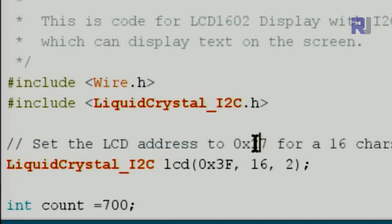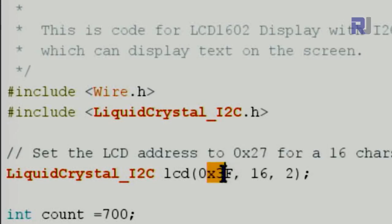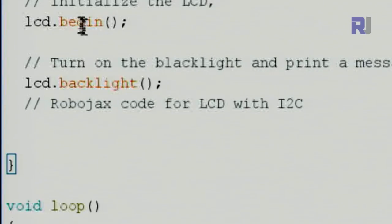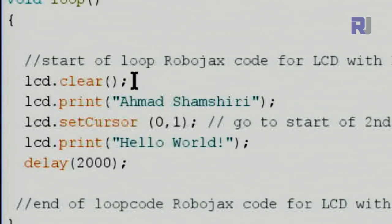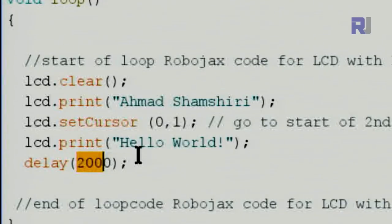You must run the I2C scanner to find the exact address and type it exactly as shown — in my previous run this was 0x27, but now it's 0x3F, so type it exactly as you saw. Inside setup(), this initializes the LCD, and lcd.backlight() turns the backlight on. Inside the loop, lcd.clear() clears the screen before printing new content.